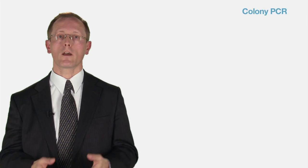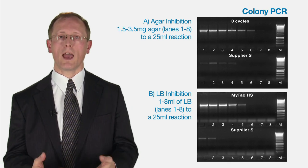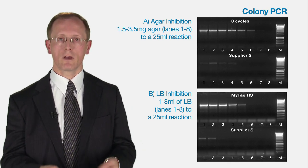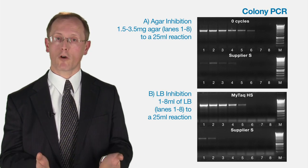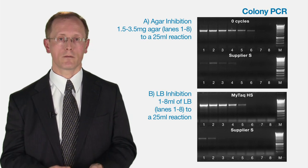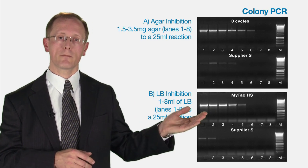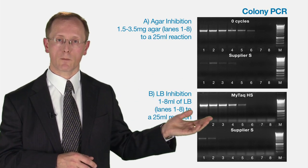If you add all this together, it means MyTaq can work with all your different DNAs. A very good example is colony PCR, where you have a lot of inhibitors, bacterial debris, potentially agar or LB broth. All of these cause problems for normal PCR. You can see where we've increased the LB or agar, and as you go higher, you get inhibition.